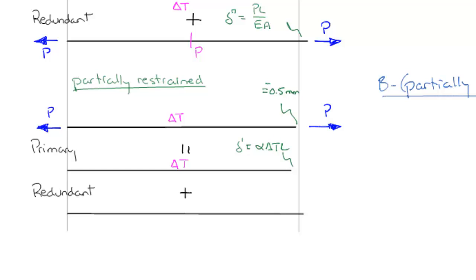Then we set up our second system. This one does have our loads P and P. It has a displacement delta double prime equal to PL over EA.